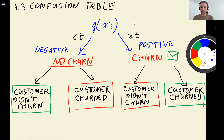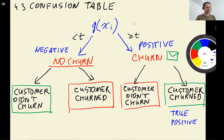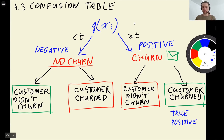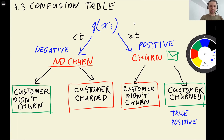Each of the four outcomes has its own name. When we predict positive and the customer does churn, this is called true positive — we think this observation belongs to the positive class and it turns out correct. The other correct prediction is true negative — we think the customer belongs to the negative class and this is correct.